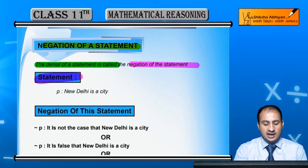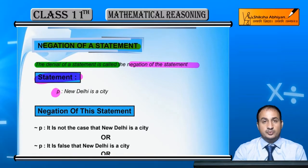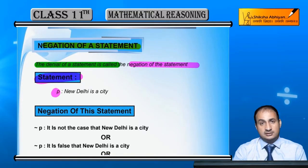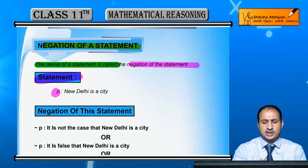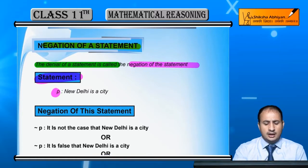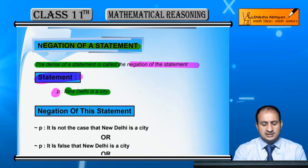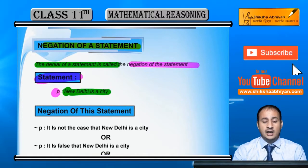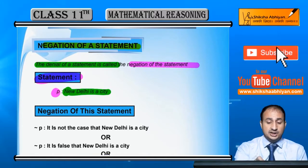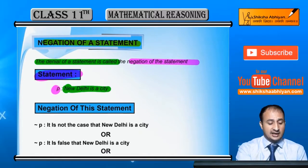Mujhe yahan pe ek statement diya hai. Statement ko small 'p' se represent kiya hai - small letter se represent kara hai. Statement hai: 'New Delhi is a city' - New Delhi ek city hai. Yeh humara statement P diya hai. Ab iska negation aapko nikalna hai.